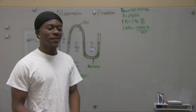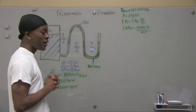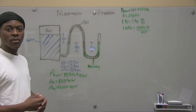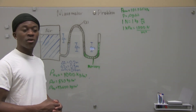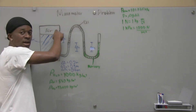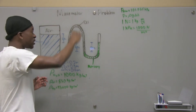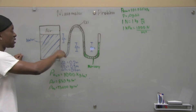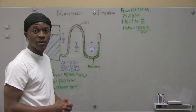Hey guys, today we're actually going to be learning about a manometer and we're going to be doing an example manometer problem. Basically, a manometer is used to measure small pressure differentials. We have a multi-fluid manometer here — this tank holds air, and as we can see, we have water in this part, then oil, and then mercury.